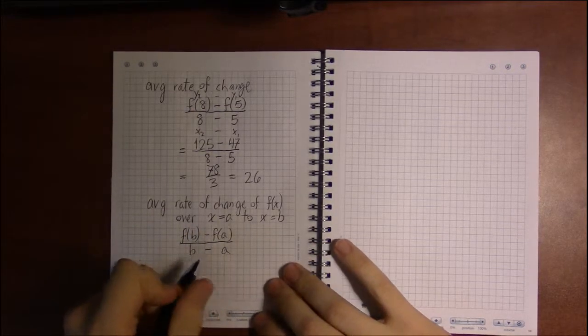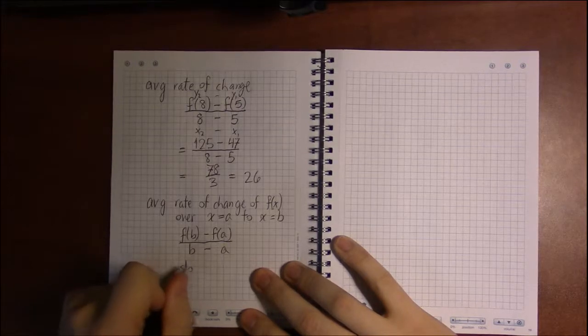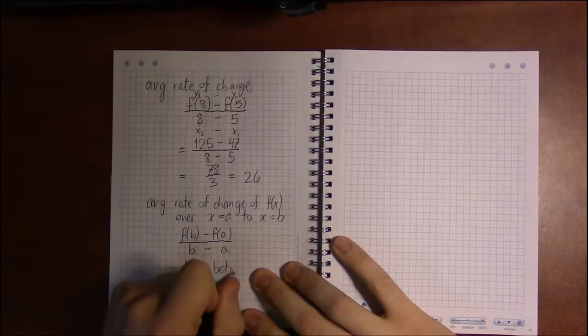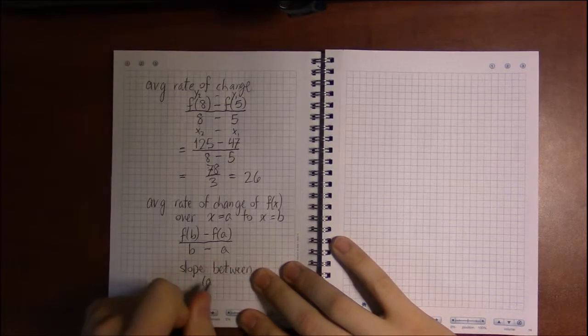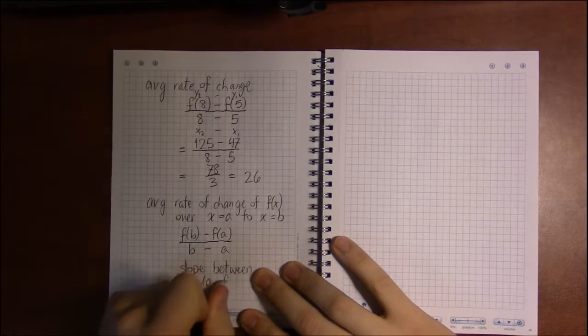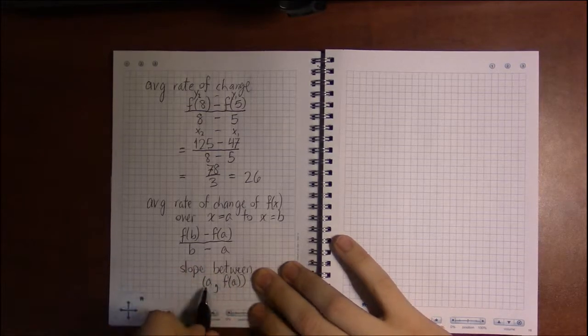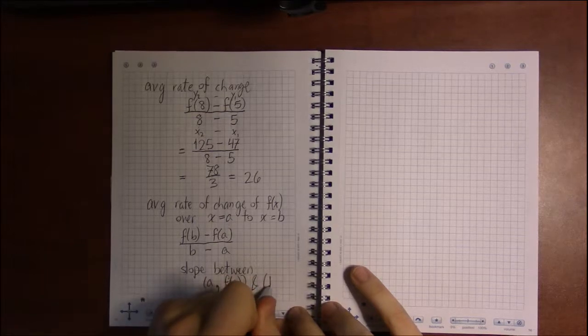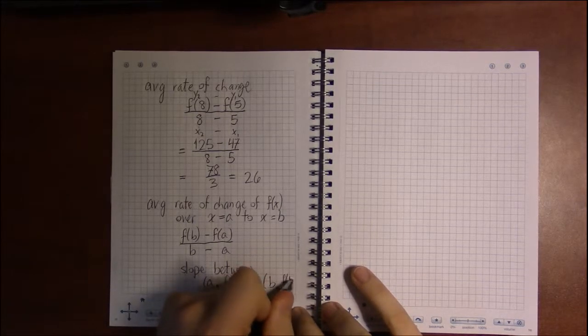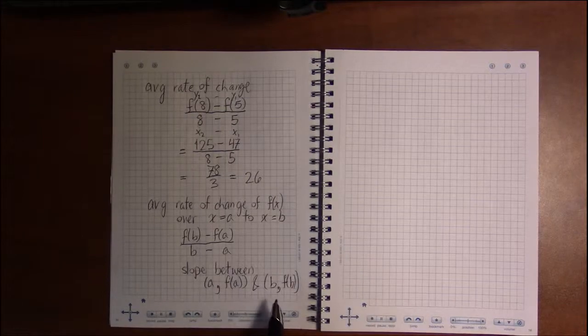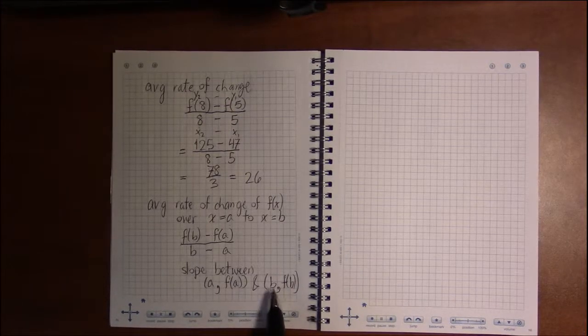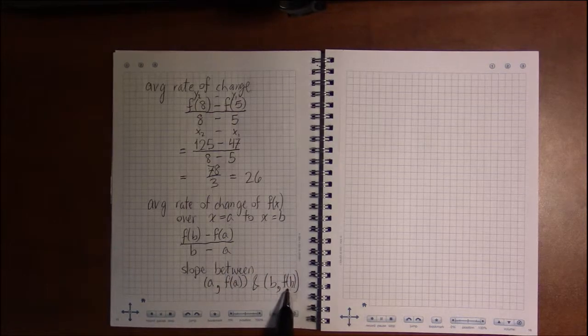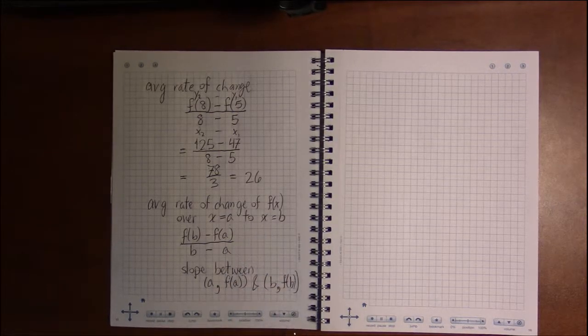And this is just a slope. This is the slope between the points a comma f of a—the y value at a when x equals a—and b comma f of b, the point we get when x equals b. f of b is the y value when x equals b.